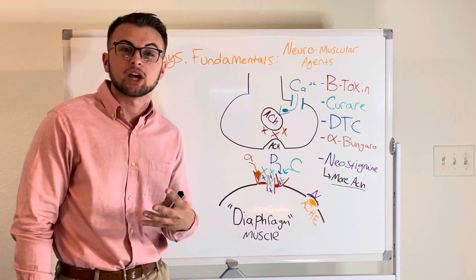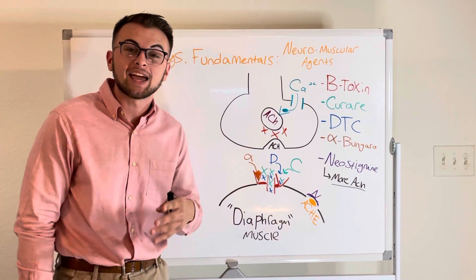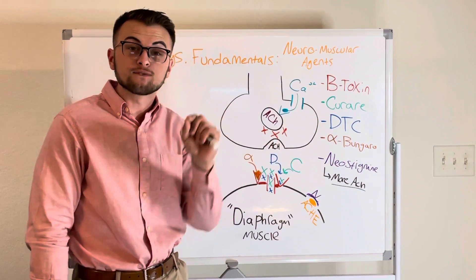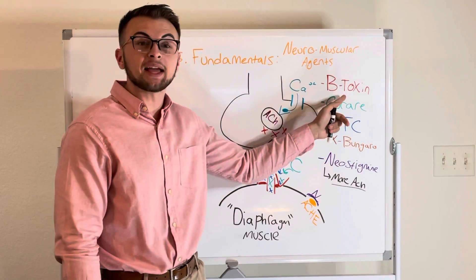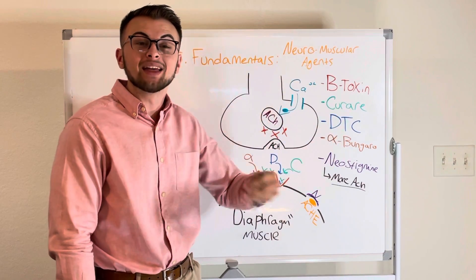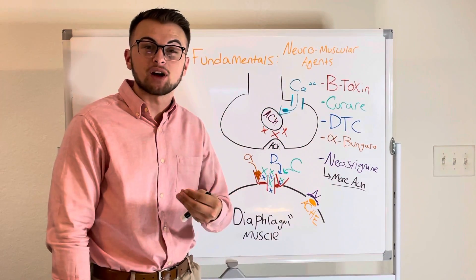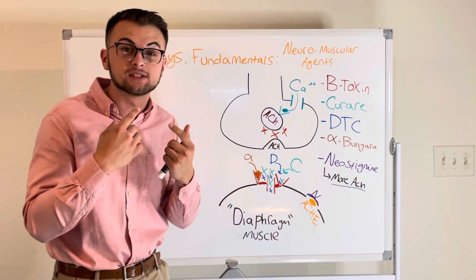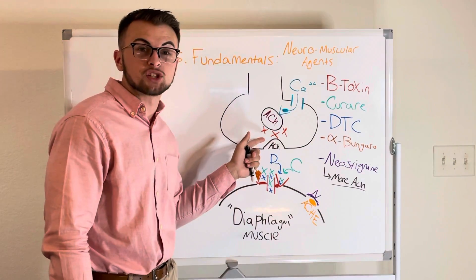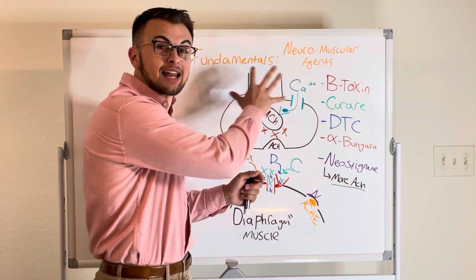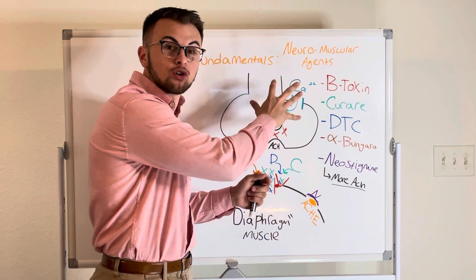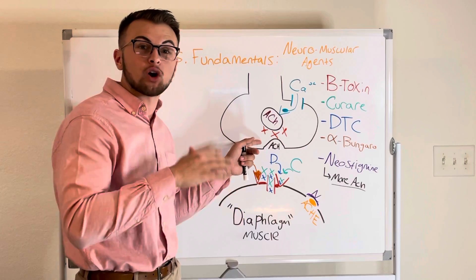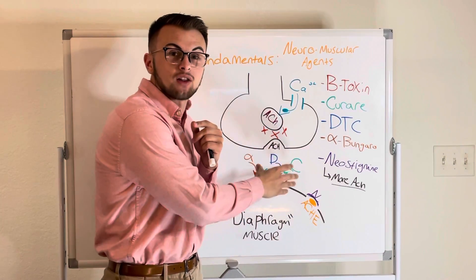Welcome to the Clinical Cousins YouTube channel, where today we're going to be talking about neuromuscular agents. First, we have our blocking botulinum toxin — this is the same stuff found in Botox that people love to get injected into their face. Botulinum toxin works on our pre-synaptic motor neuron and doesn't allow our vesicle to ever be opened into the synaptic cleft.